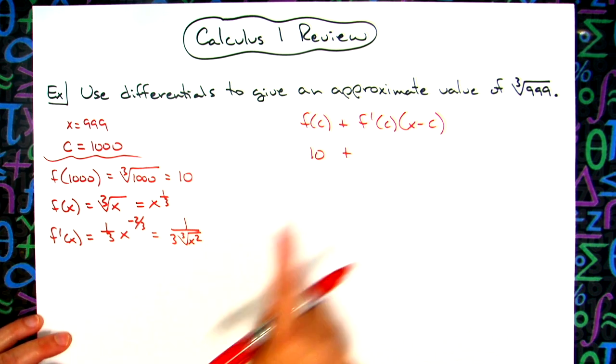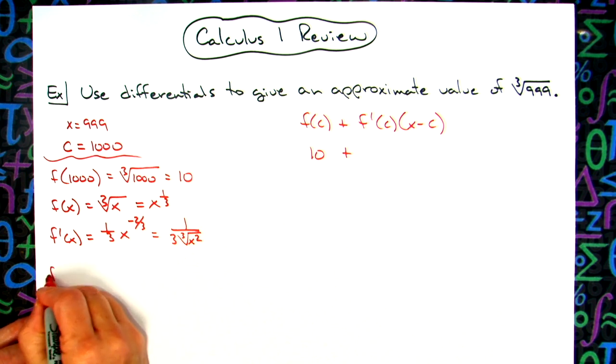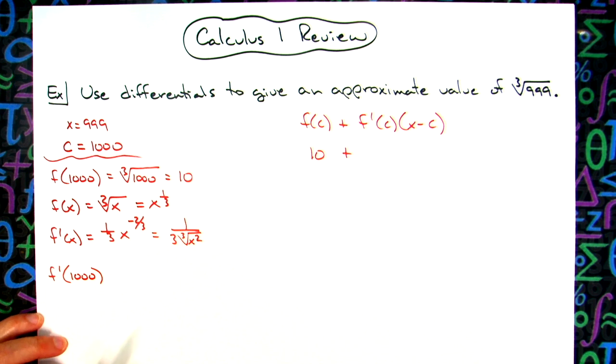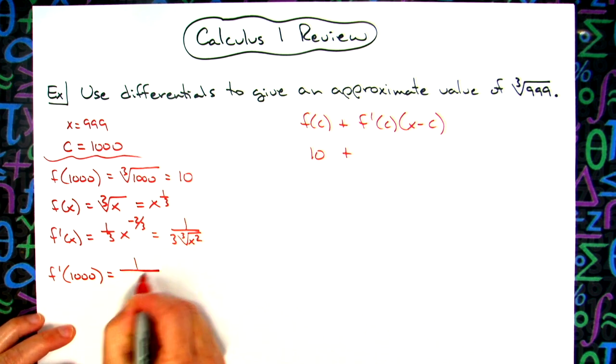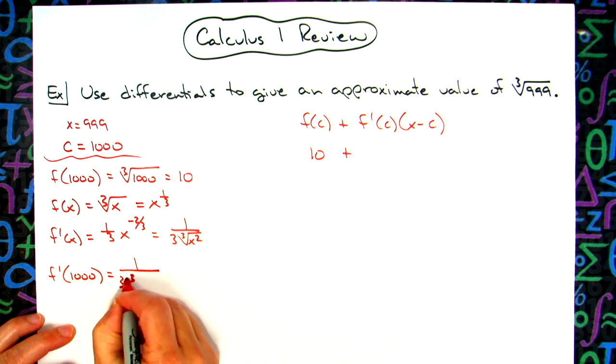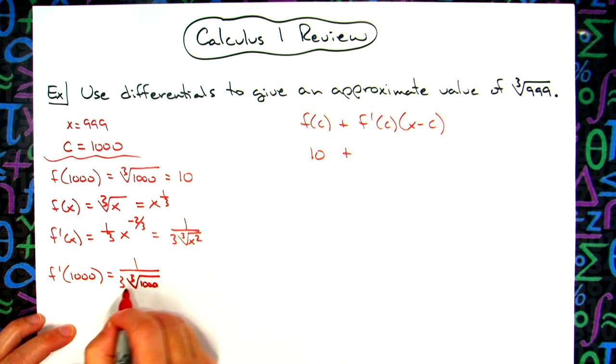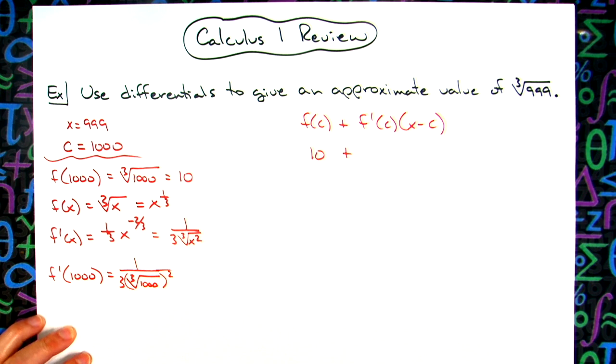Because now my next step is I need to be able to find f prime of c. So f prime of 1,000. I want to be able to put that into this and make it easy math here. So I'll have a 1 over 3 times the cube root of 1,000, and then I'm going to square that. Since the cube root of 1,000 is 10, it's going to be a whole lot easier to be able to do that math in our head if we do it that way.